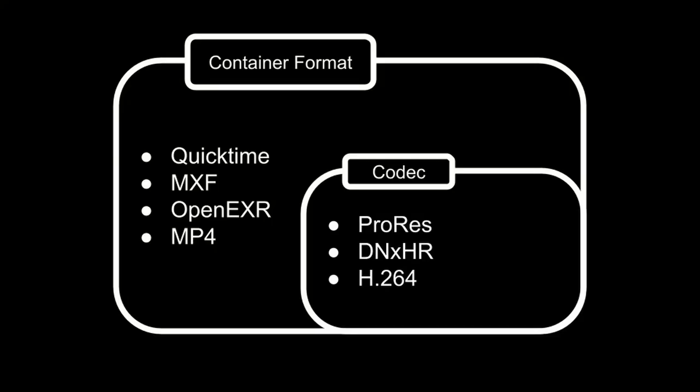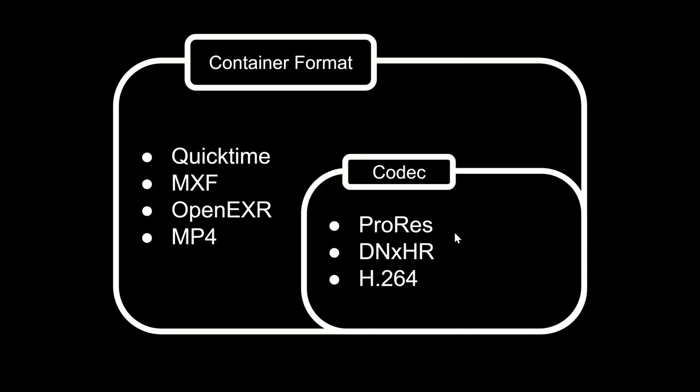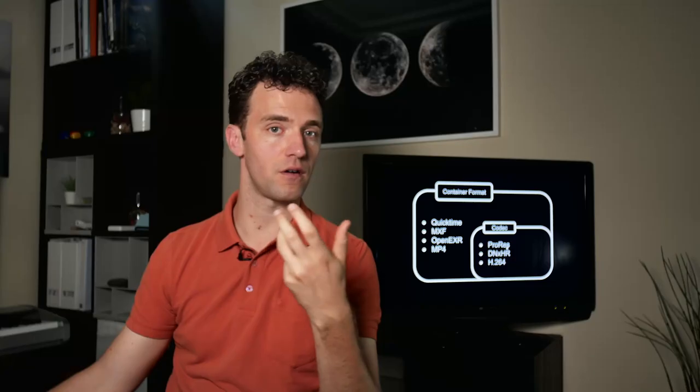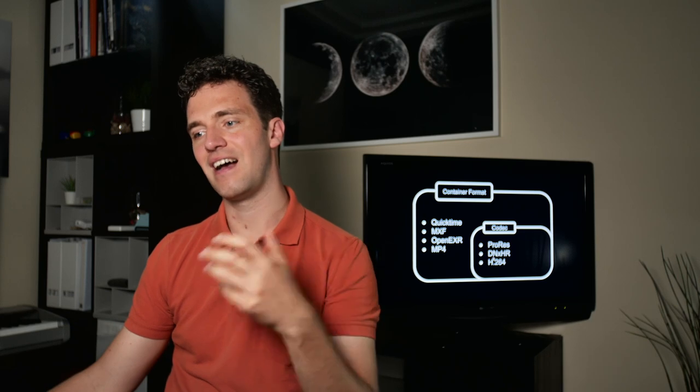Inside the container you have the video codec. Typical video codecs include ProRes or DNxHR — ProRes coming from Final Cut Pro, DNxHR being the Avid equivalent. They're quite similar. For delivery, there's H.264 and others like BRAW. In some cases there's overlap — you can have overlapping codecs within different containers, or different containers for the same codec.